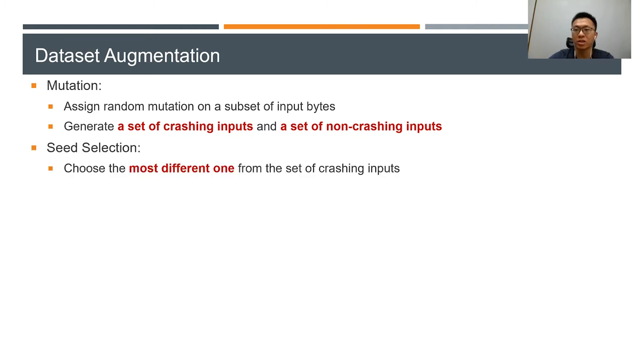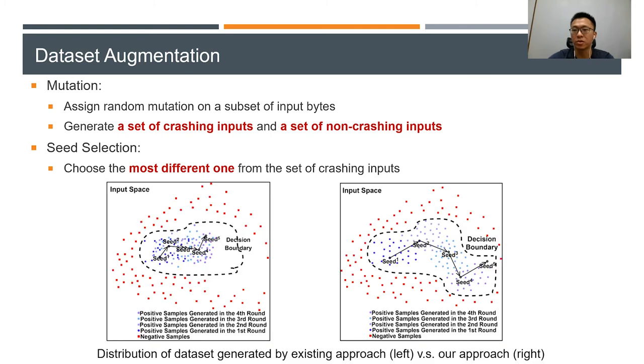For seed selection, we select the most different one from the set of crashing inputs using bigram models to measure the similarity. This outputs better distribution; the network is less likely to overfit. The picture on the right illustrates the idea when the most different seed is chosen.